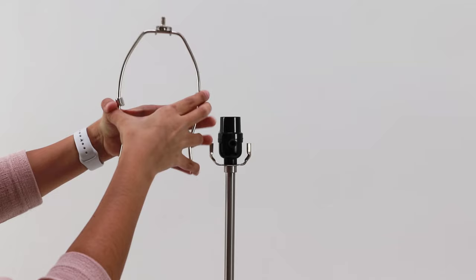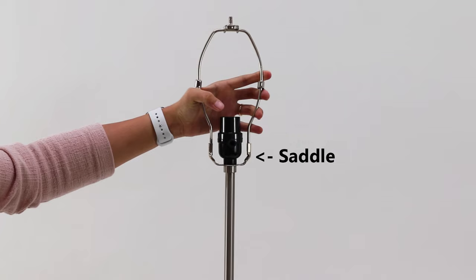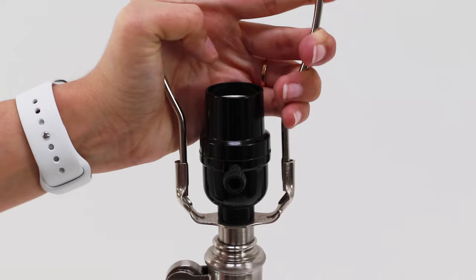Begin by sliding the leg fasteners upwards and pinching the legs of the harp. Continue by setting the pinched legs in the grooves of the saddle found at the top of the lamp body. Slide the leg fasteners back down to secure the harp into the saddle.